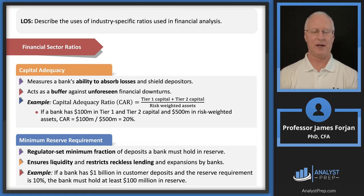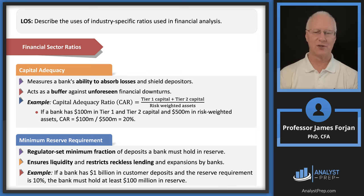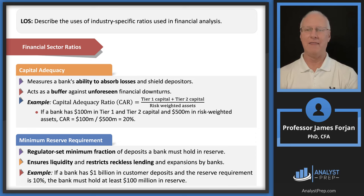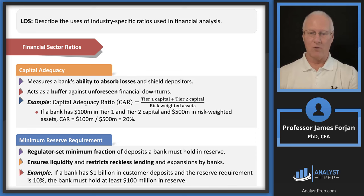Minimum reserve requirement is set by the government. In the US, if a bank accepts $100 in deposits, it must keep a percentage — say $12 — in cash in case depositors need it. It ensures liquidity and restricts reckless lending and expansion by banks. You can express this as a ratio: reserve requirement of 10% or 12%.